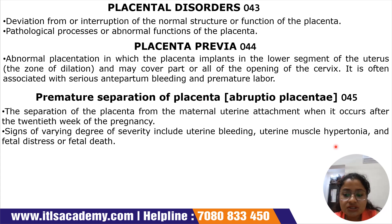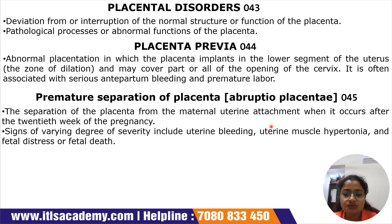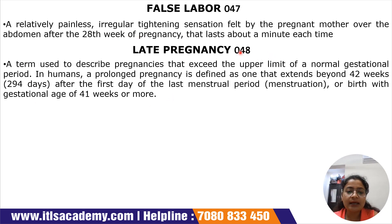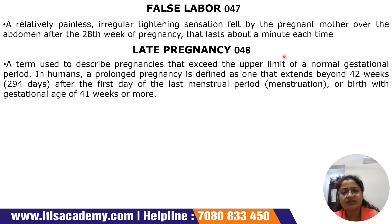Subcode O45 corresponds to premature separation of placenta, also known as abruptio placenta — the separation of the placenta from the maternal uterine wall after the 20th week of pregnancy. Signs include uterine bleeding, uterine muscle hypertonia, and fetal distress or fetal death. O47 refers to false labor — a relatively painless, irregular tightening sensation felt over the abdomen after the 20th week of pregnancy, lasting about a minute each time, and not a serious condition.